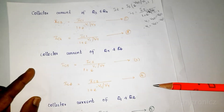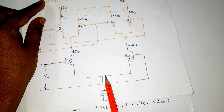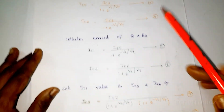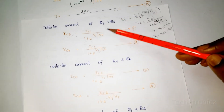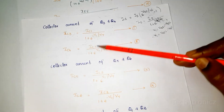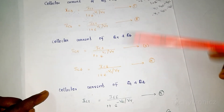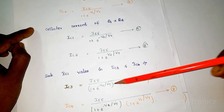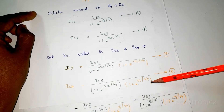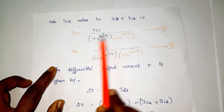We now have all six equations. The orange color indicates the cross coupled emitter coupled pair, and the green color indicates the series emitter coupled pair. Next, we substitute IC1 and IC2 values into IC3, IC4, IC5, and IC6. Substituting IC1 into IC3 and IC4 gives their updated expressions. Substituting IC2 into IC5 and IC6 gives their updated expressions.